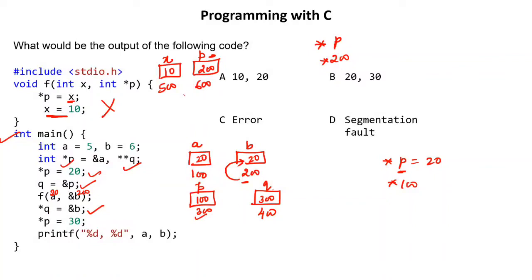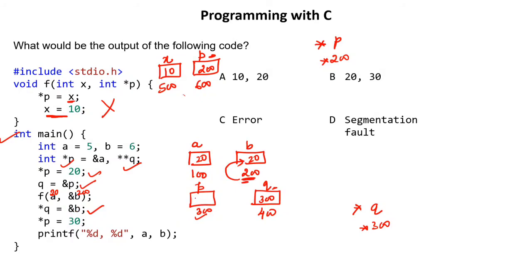Back in main, we do *Q = address of B. Q contains 300, so pointer Q means we go to address 300 — that is, the location of P. We move inside P and change its value to the address of B, which is 200. So P is now updated to 200.